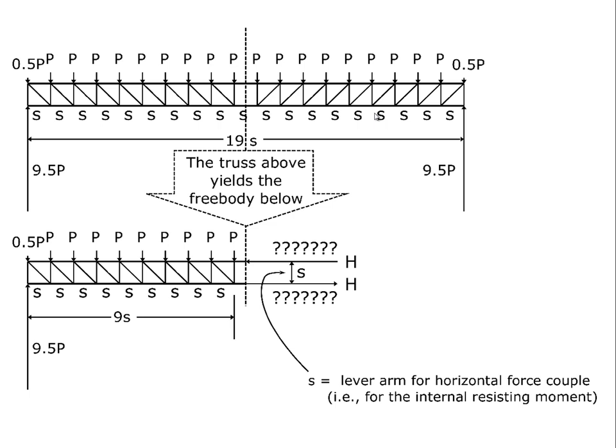However, we know that if the truss is in equilibrium, every sub-portion of the truss is also in equilibrium. This means if we want to know what's going on internally, we can take part of the truss and slice it — the slice point creates a free body at a location of interest to us. For example, one of the most common places a beam or truss under uniform load is likely to fail is at the center, so we can create a free body by slicing at the center along a dashed line, and we draw the left end of the truss as our free body.